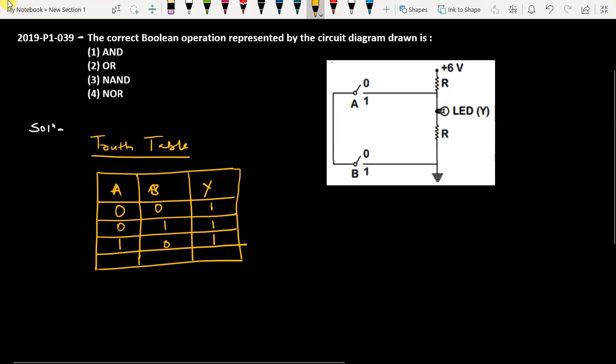But if you take both switches closed, then this will be the case of short circuit and the current will flow like this. In that situation, the LED will not glow, so the output will be 0.